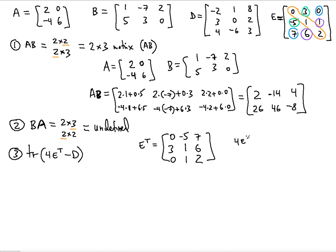4E transpose means multiplying each entry of E transpose by 4. That gives us: 0, -20, 28 in one row; 12, 4, 24 in another; and 0, 4, 8 — that's the 4E transpose matrix.